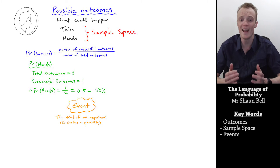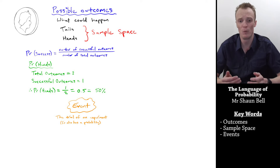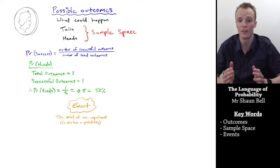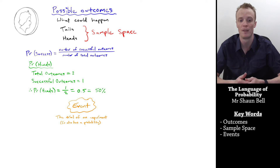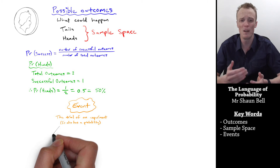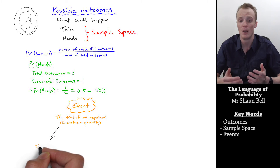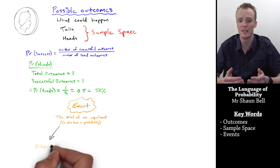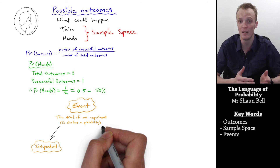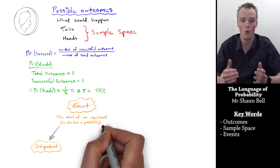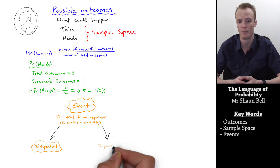You can have more than one event. For example, what if I were to flip this coin twice? I would have two events with two outcomes. Now when we have more than one event occurring, we can describe these events as being either independent events or dependent events.